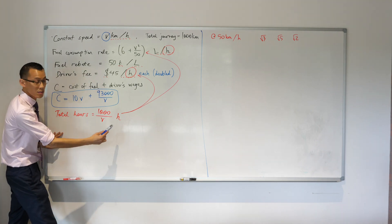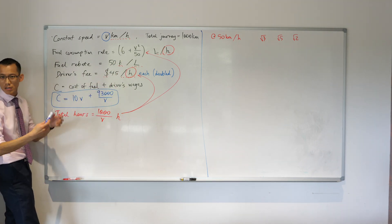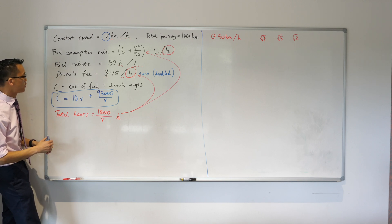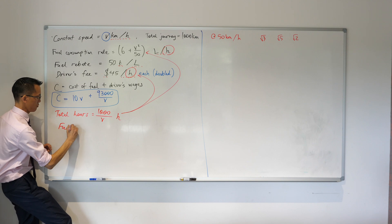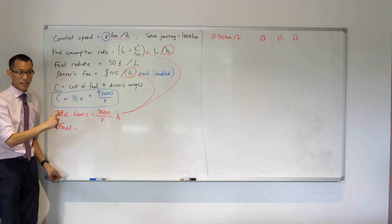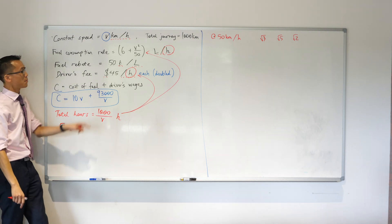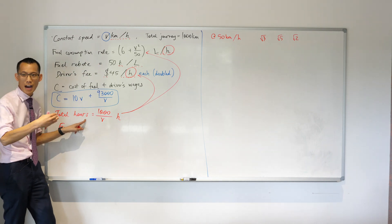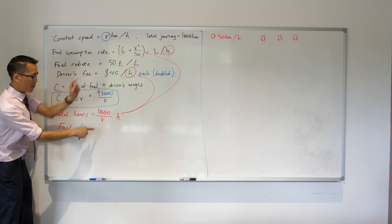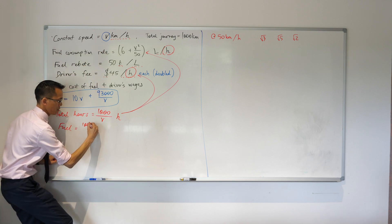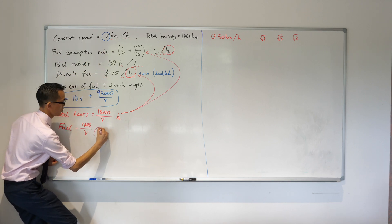So where are we at? We said we would take this total number of hours and we multiply by each of these things. Let's just do it one at a time, shall we? So I'm going to do the fuel consumption rate. So fuel - I'm not going to write consumption rate anymore because I'm about to multiply the rate by how long I'm doing the rate for. Okay, so it's simply this multiplied by that. So I'm just going to write it down first. Let's just do a nice straight substitution step.